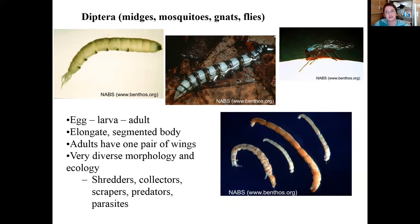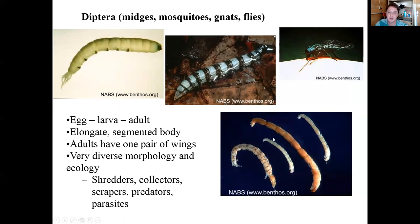Next is Diptera, the true flies. These are often the weirdest-looking things found in streams — they generally look like grubs and it can be hard to tell which end is the head. Some do have clearly defined segments. They have very diverse morphology and ecology. At the bottom right is a chironomid, which is really common especially in sediments with low oxygen. They often turn red when brought to the surface due to hemoglobin, which they use to efficiently obtain oxygen in low-oxygen environments.